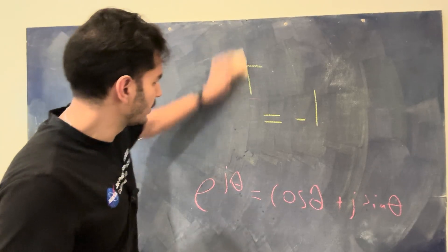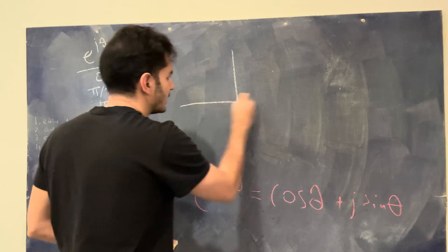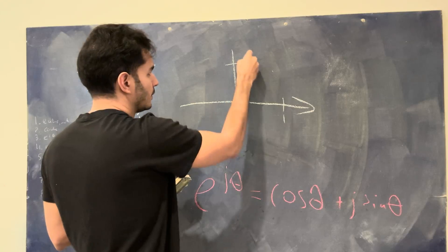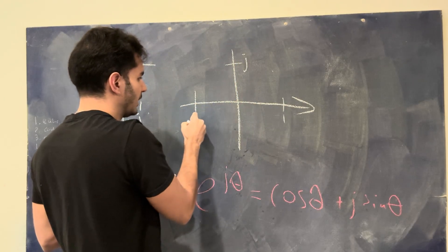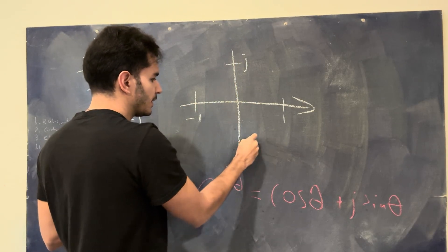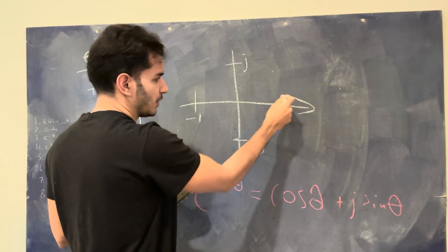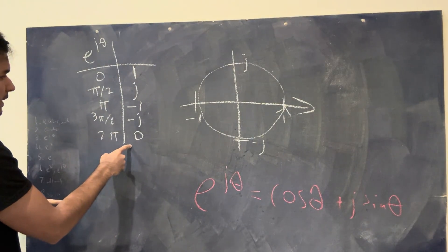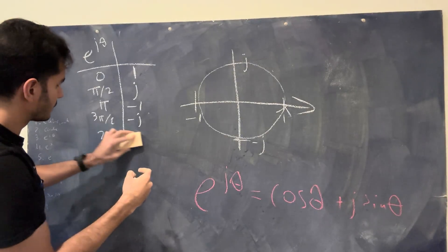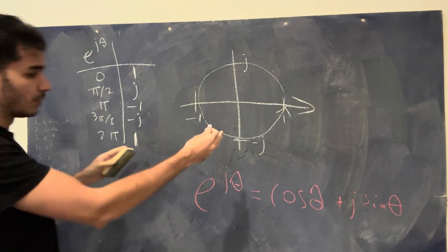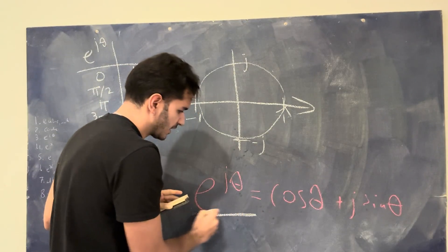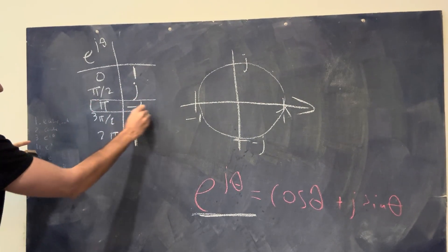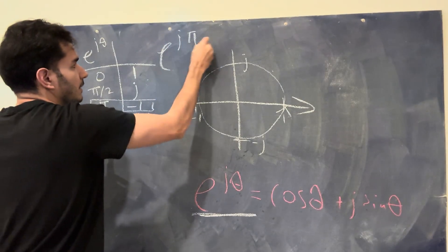If you think about it, all we're doing here is going in a circle. At angle 0, we have a value of 1. At 90 degrees (pi over 2), we have j. At 180 degrees (pi), we have minus 1. At 270 degrees (3 pi over 2), we have minus j. And then at 2 pi, once we've completed the full circle, we're back to 1. So that 'beautiful' equation was just one special form — what happens when you throw in a pi: e to the j pi equals minus 1.